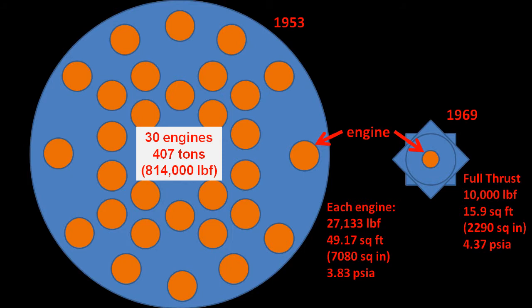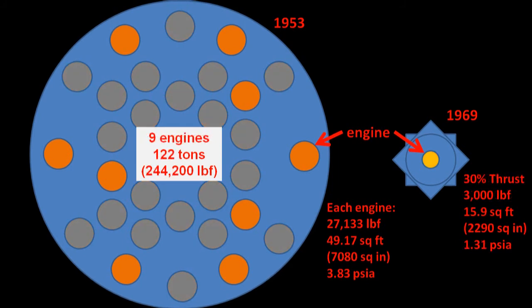Instead, Von Braun proposed to use multiple engines and switch them off in banks to throttle back on total thrust. If he needed only 30% max thrust to land, he would use only 9 of the 30 available engines, each working at full throttle, 3.83 PSI.